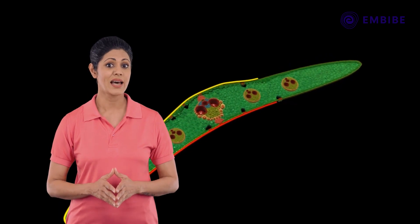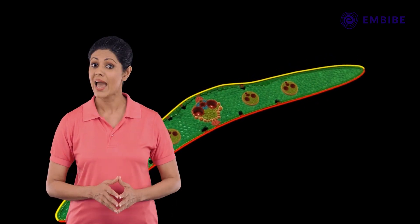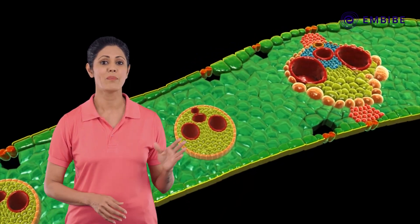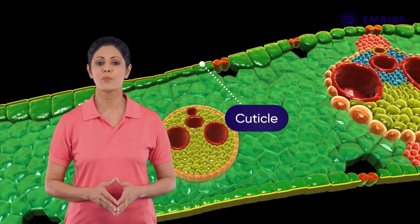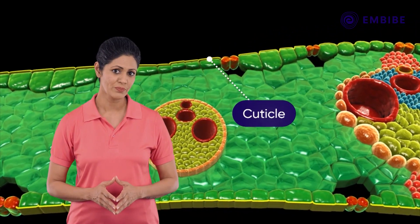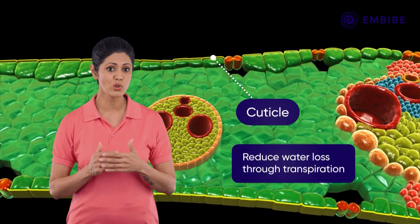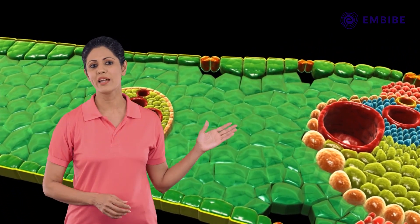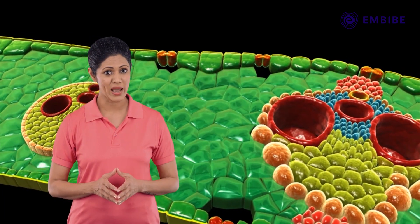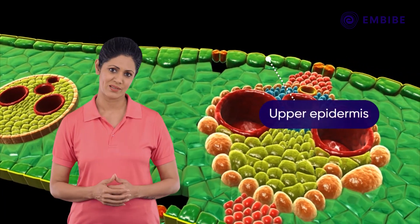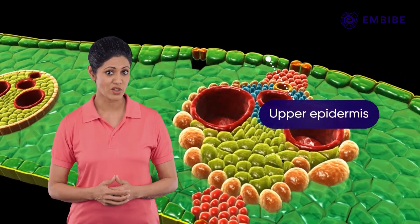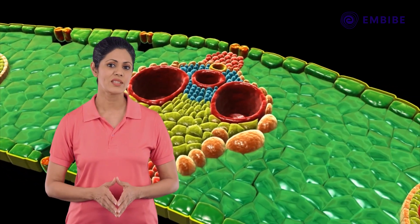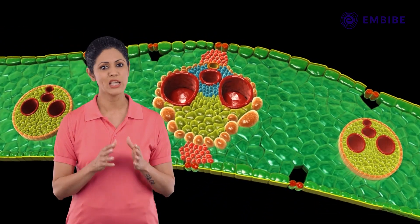Proceeding from the top to the lower portion of the leaf, we see that both the upper and lower portions of the leaf are covered by a cuticle. The primary purpose of the cuticle is to reduce water loss through transpiration. The upper layer of cells is referred to as the upper epidermis, whose function is to provide protection.